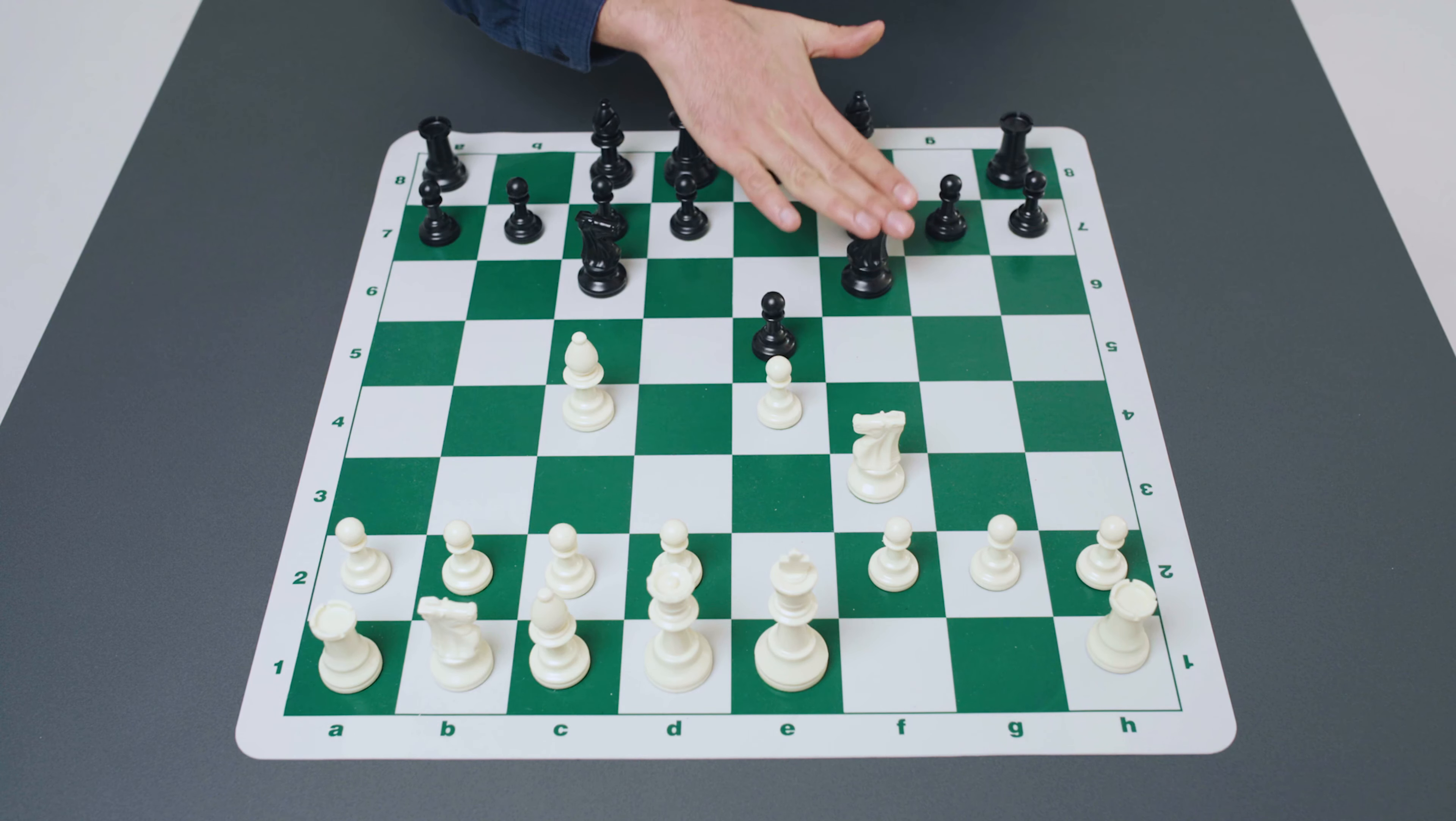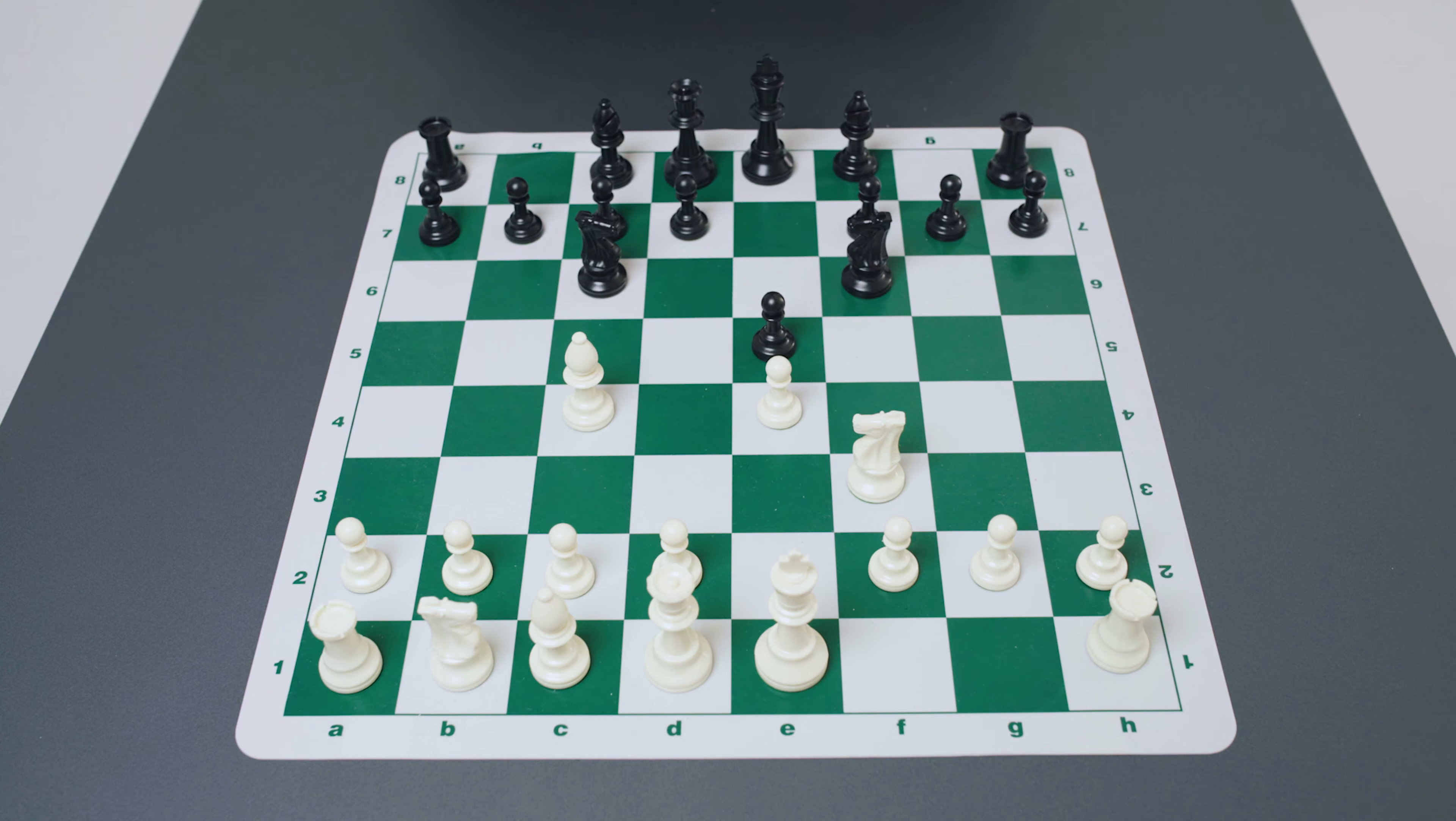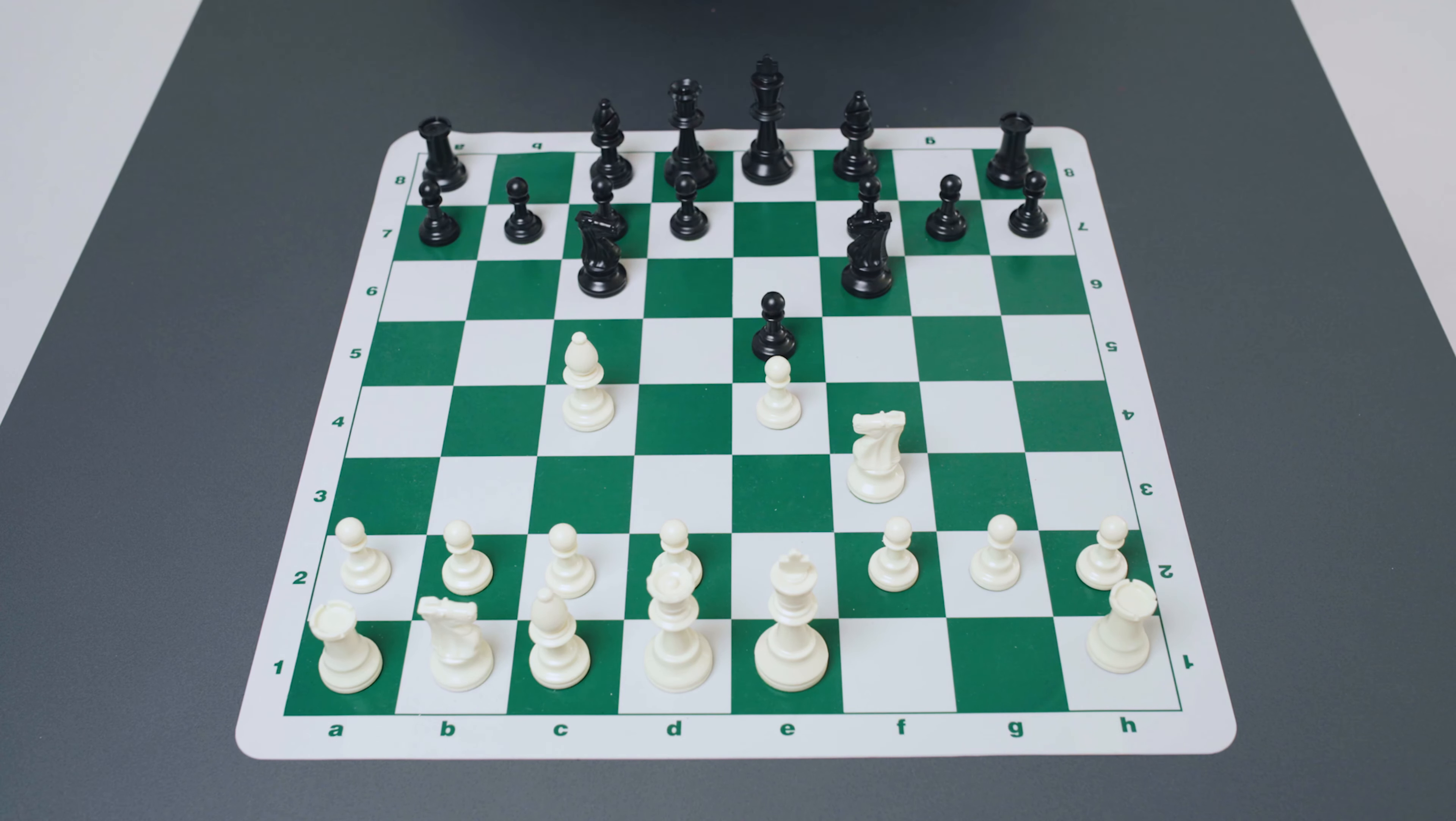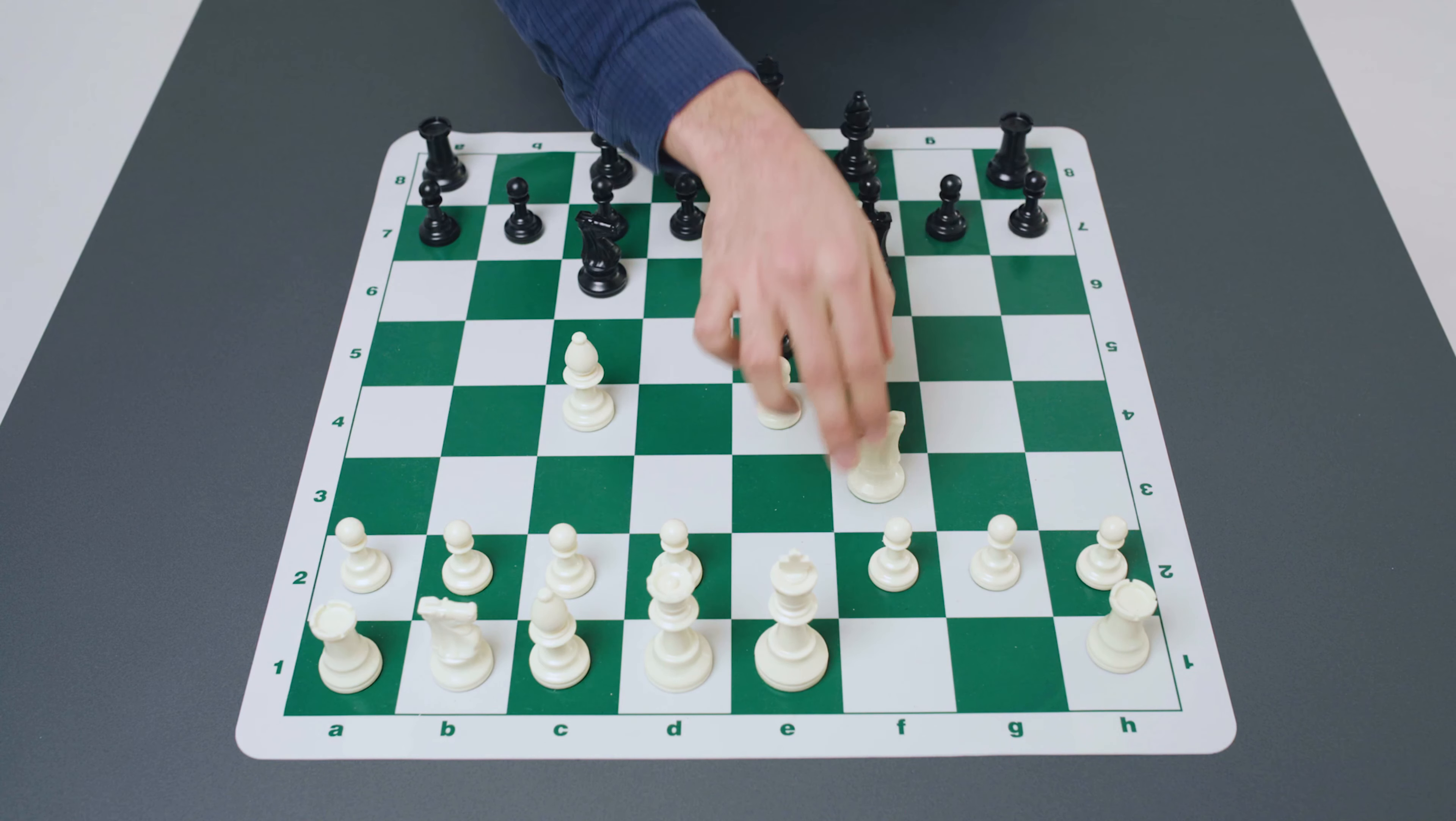We just looked at the Evans Gambit. Now we can consider the move pawn to d4 which again presents black a myriad of options. Pawn takes d4, bishop takes d4 or knight takes d4 and this is the so-called Deutz Gambit. So it's a very interesting gambit as well and we'll look at this in more depth later on.